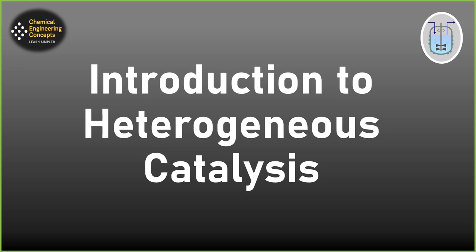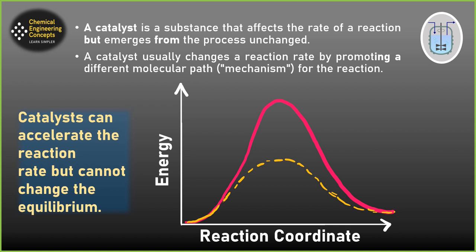We are also going to see that when we have catalysis, both mass transfer and reactions are happening — so which one would be the dominating or controlling step? We will see that in today's video. So let's define the catalyst first. A catalyst is basically a substance that affects the rate of reaction but itself emerges unchanged from the process. It changes the reaction rate by promoting a different molecular path.